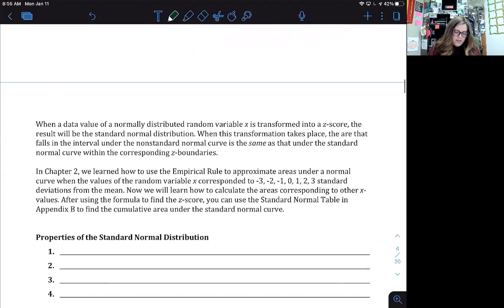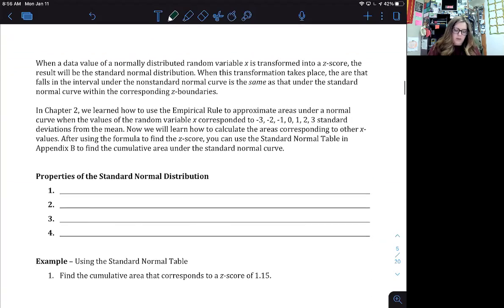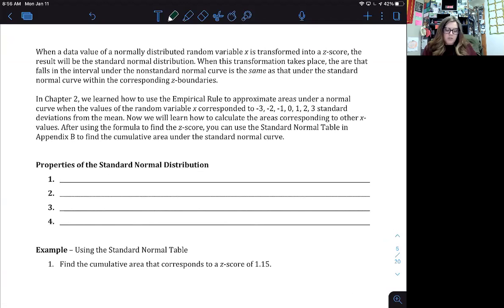Okay, so when a data value of a normally distributed random variable x is transformed into a z score, the result will be the standard normal distribution. When this transformation takes place, the area that falls in the interval under the non-standard normal curve is the same as that under the standard normal curve with the corresponding z boundaries. So what that's saying is the area between those data entries, whether you're looking at the normal distribution or the standard normal distribution, are the same, which is what allows us to find that area.